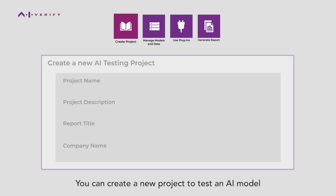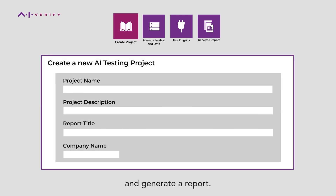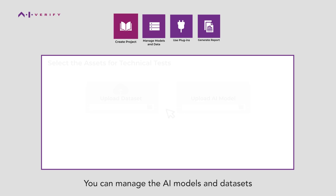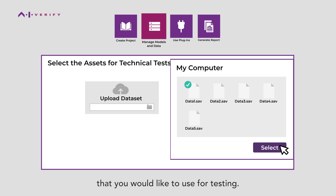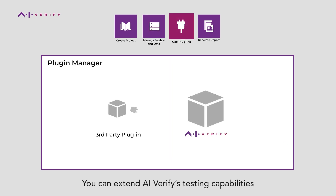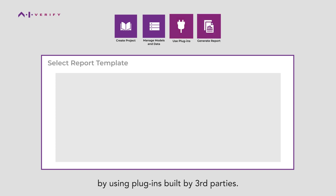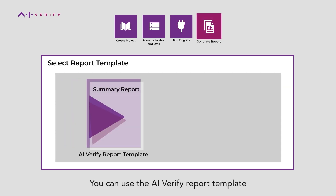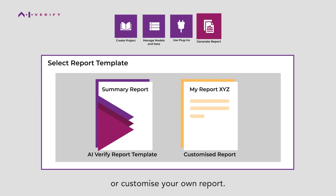There are four key features. You can create a new project to test an AI model and generate a report. You can manage the AI models and datasets that you would like to use for testing. You can extend AI Verify's testing capabilities by using plugins built by third parties. You can use the AI Verify Report Template or customize your own report.